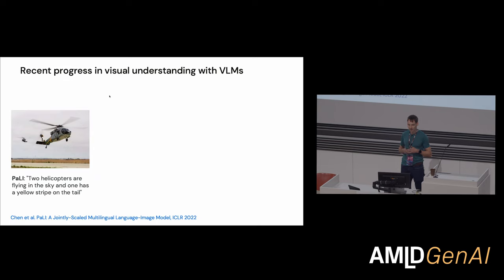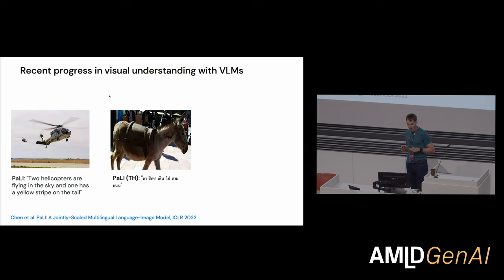For example, some basic captioning. Pali says two helicopters are flying in the sky and one has a yellow stripe on the tail. So it's sort of accurate and gives a little bit of detail. Pali can also do captioning in multiple languages, and you can just take my word for it that the captioning is decent here.